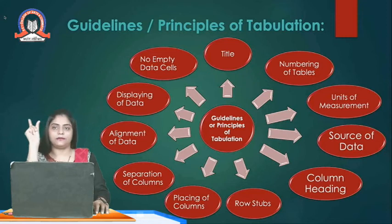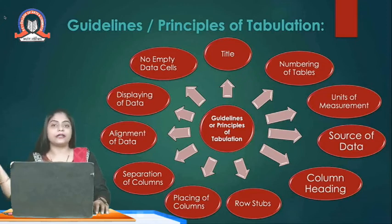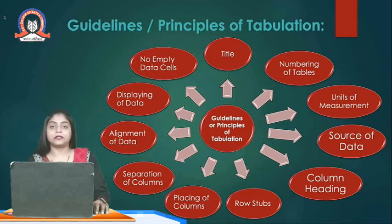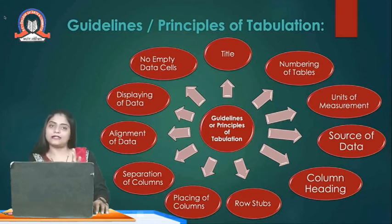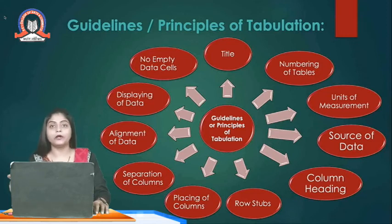For making tables, we need to follow certain guidelines. Every table should have a title — whether it belongs to age group, gender, occupation, or sales in a specific territory. Every table must have the title. The numbering of the table is also important. In a thesis or project report with, say, 80 tables, they should be numbered 1.1, 1.2, 1.3, 2.1, 2.2, and so on — for example, 1.1 to 1.16 in chapter one, 2.1 to 2.10 in chapter two. Every table should have a number in a specific research report or thesis.